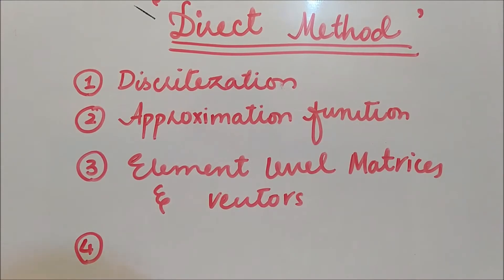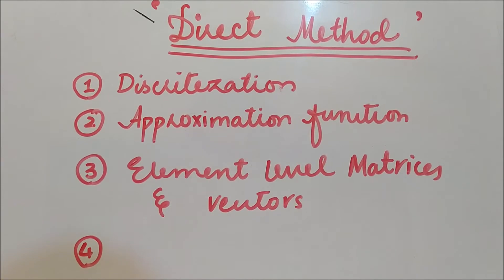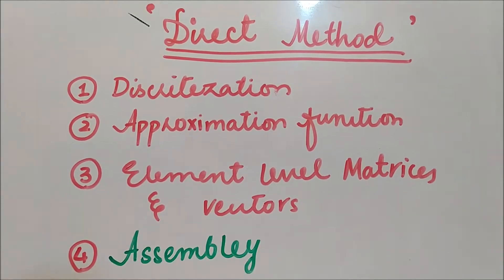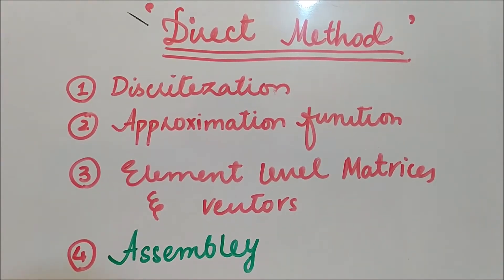Hello everyone, this is DA from eAcademy. Now we will start the fourth step of the direct method, that is assembly. Assembly is the step in which we are going to assemble the element equations to obtain the overall equilibrium equation.